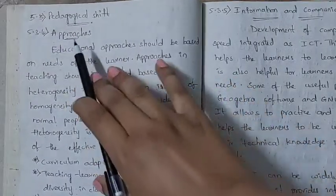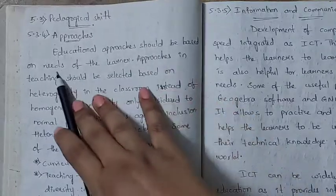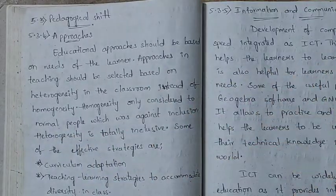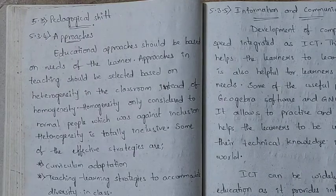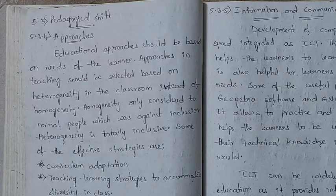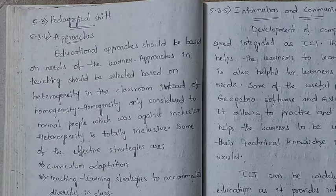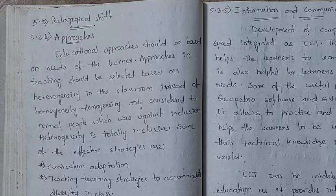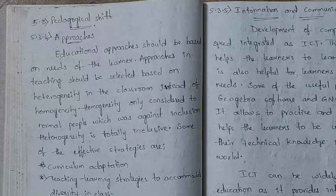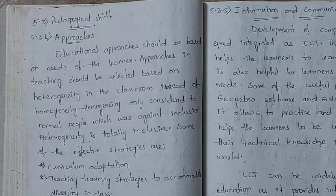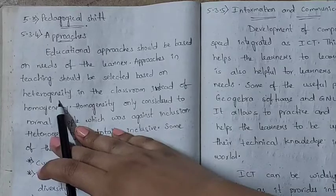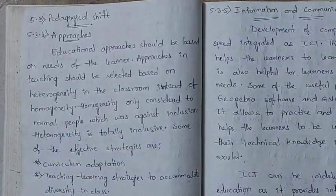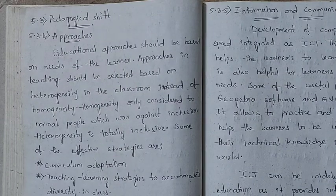The first topic is approaches. Educational approaches should be based on the needs of the learner — as discussed in the last class, approaches and strategies in inclusive education must fit the learner's needs. In today's classrooms, a variety of strategies and approaches must be implemented so that each and every student benefits. Approaches in teaching should be selected based on heterogeneity in the classroom instead of homogeneity.